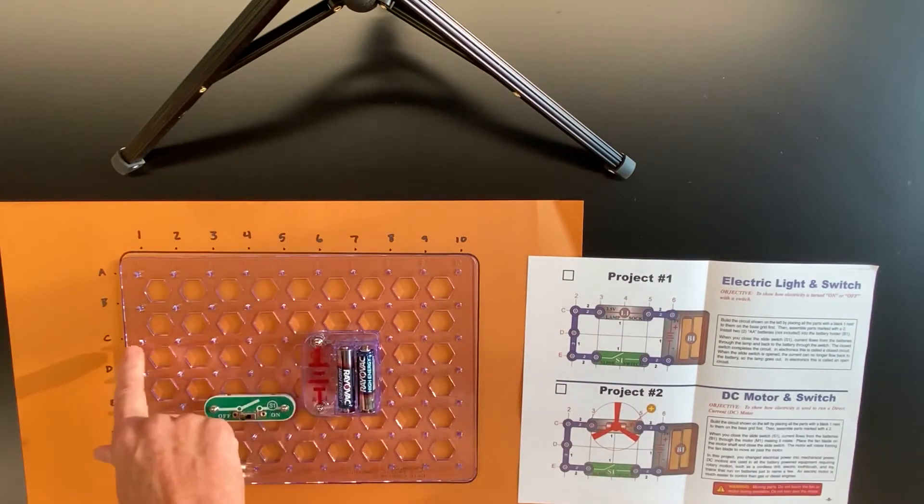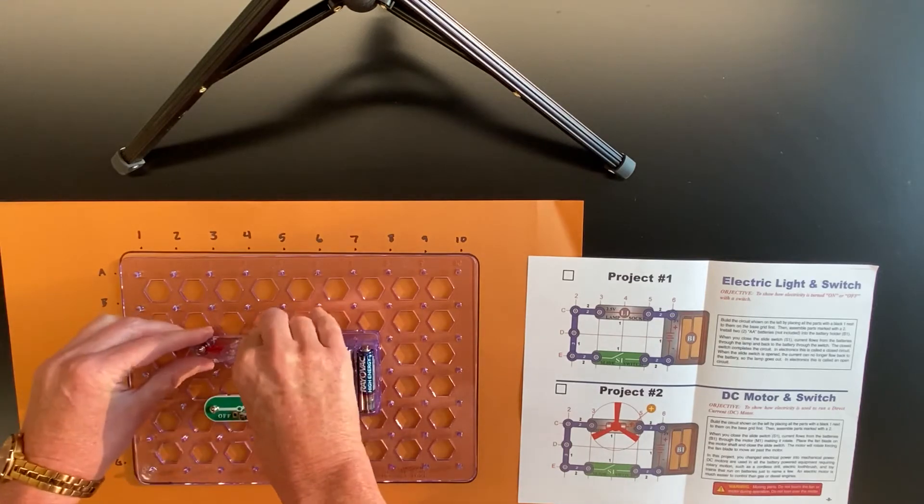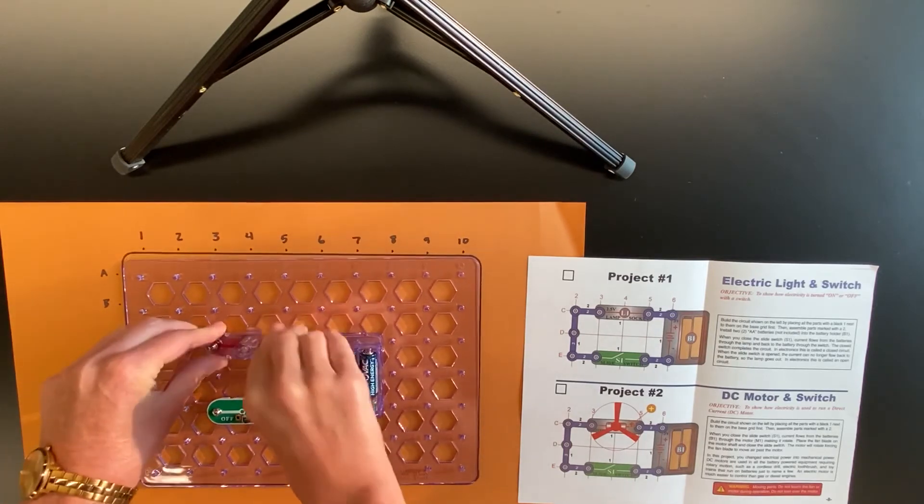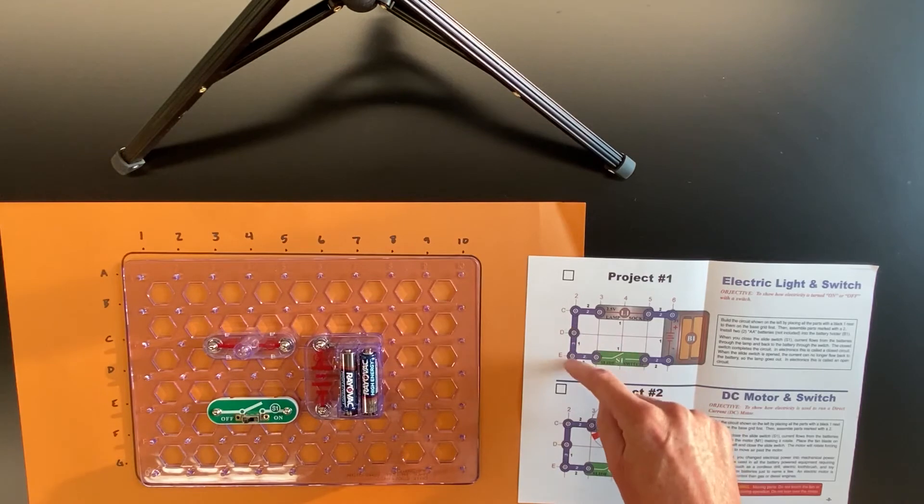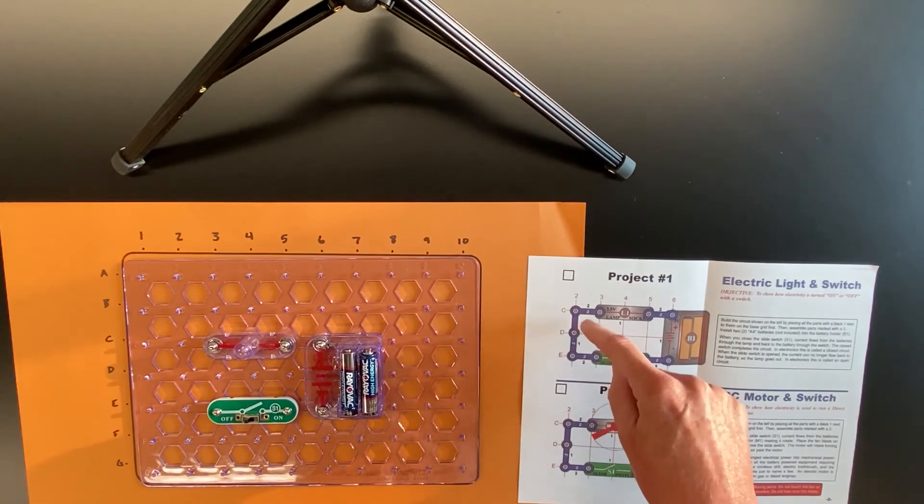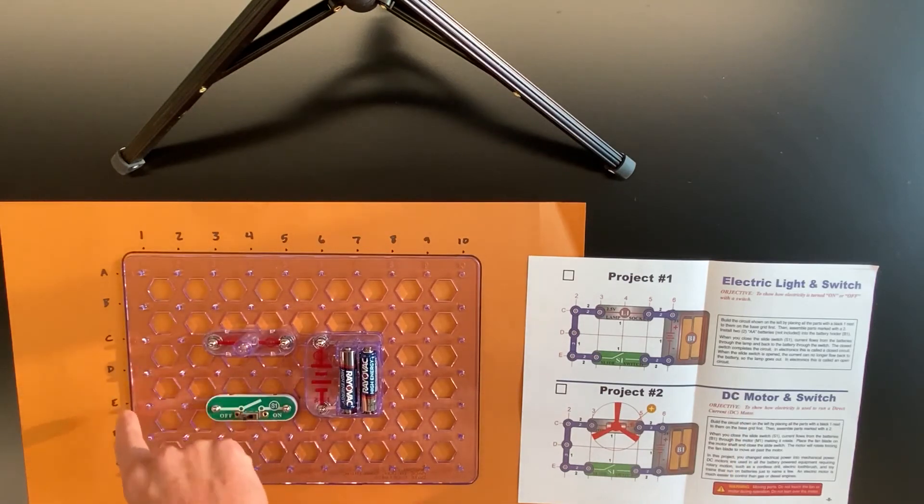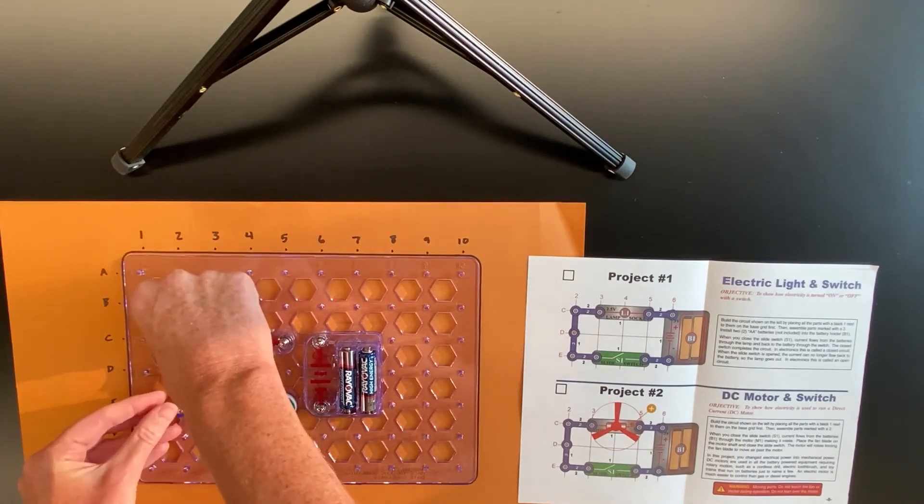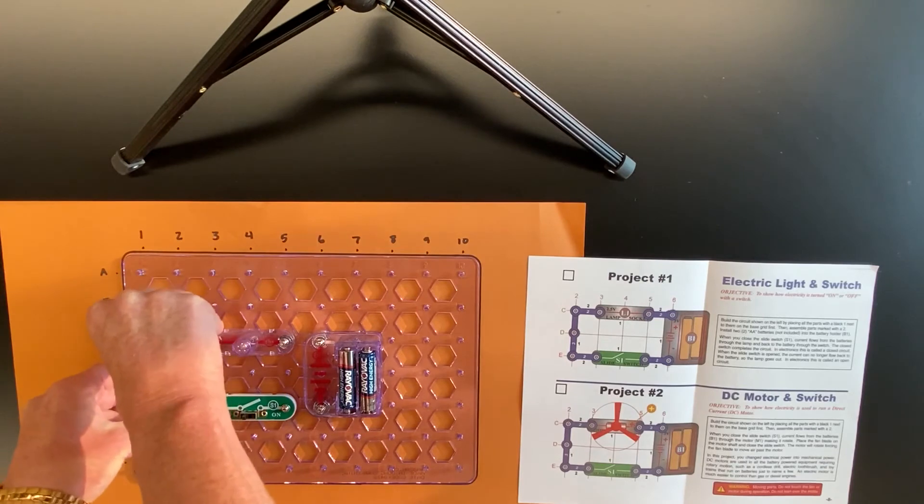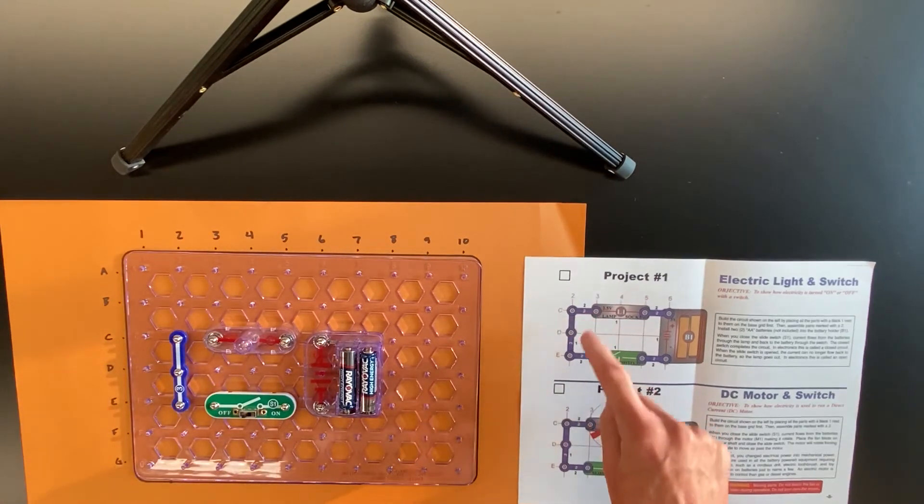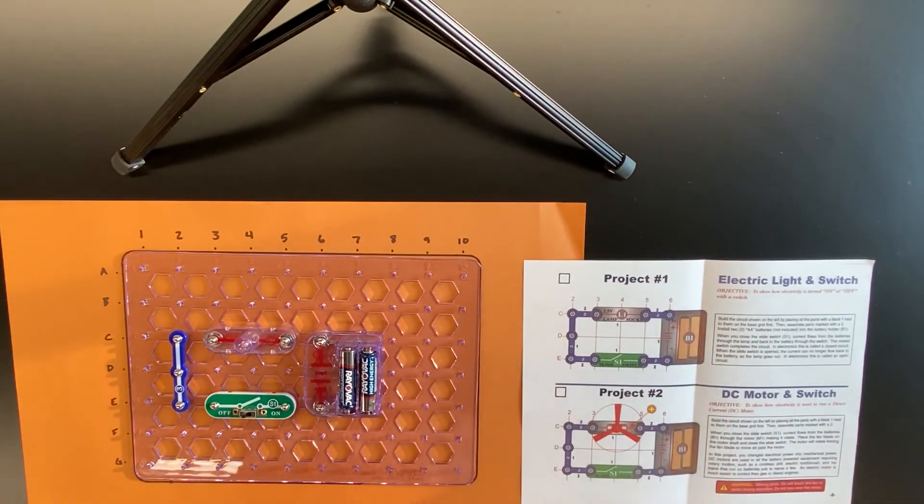This three-piece component is number two at CDE, so I put it here. Then these two pieces are the connectors that complete the circuit.